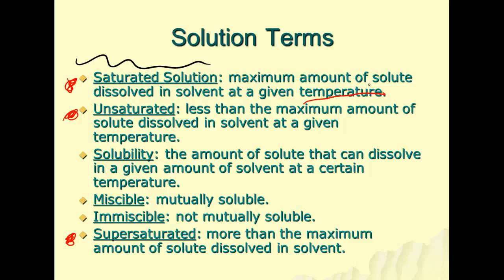Solubility is what we're going to be looking at in terms of a graph. We're going to be looking at a solubility curve. The solubility curve shows the different amounts of solute that can be dissolved in a given amount of solvent at a certain temperature. This should be explained a little bit better when we get to the graph. Miscible is a term and immiscible is the antonym of it—it means mutually soluble.